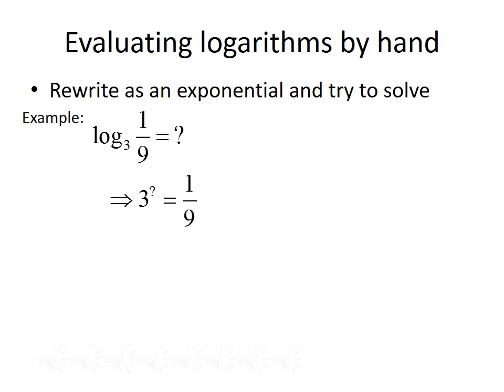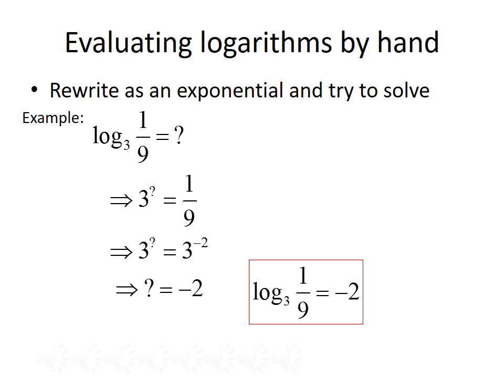We want to solve for the unknown. The goal is to get both sides written with the same base. We can rewrite 1 over 9 as 3 to the negative 2, giving us 3 raised to the unknown equals 3 to the negative 2. Since the bases are the same, we set the exponents equal, so the unknown quantity equals negative 2. This means log base 3 of 1 ninth equals negative 2.